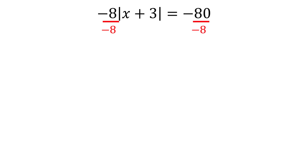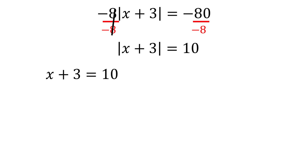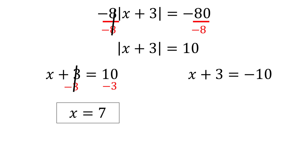Dividing both sides of the equation by negative 8, we get the absolute value of x plus 3 is equal to positive 10. Therefore, x plus 3 could either equal positive 10, or x plus 3 could equal negative 10. Solving the first equation, we subtract 3 from both sides to get x is equal to 7.